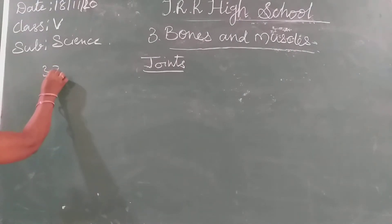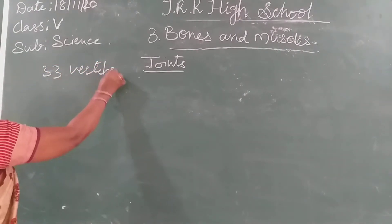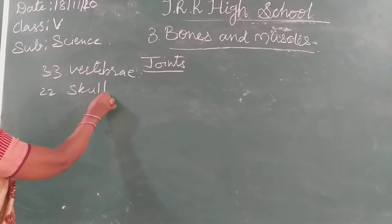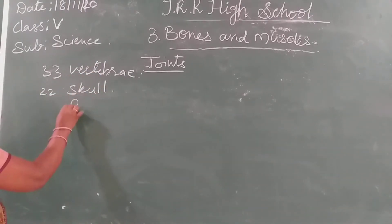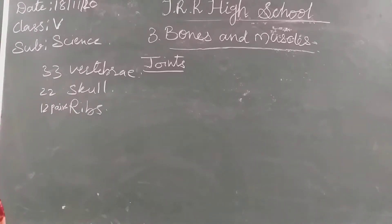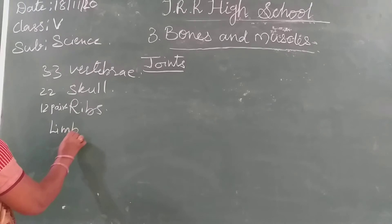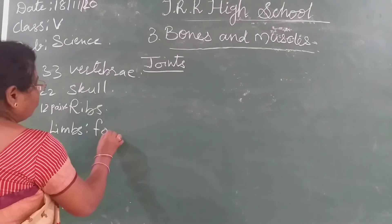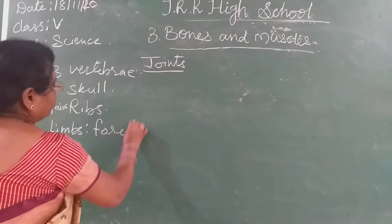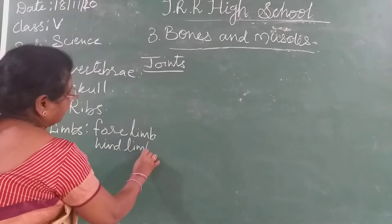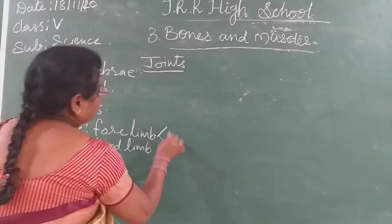So, 33 vertebrae are present. In the skull, there are 22 bones. In the rib cage, we have 12 pairs of rib bones. And coming to limbs, there are 2 pairs of limbs - 4 limbs total: forelimbs and hind limbs.